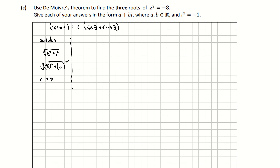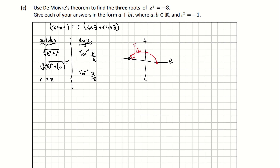Now I need to find the argument theta. The angle is found by taking tan inverse of b over a, which is tan inverse of 0 over minus 8. This will throw up an error on a calculator, so we sketch it on the Cartesian plane. The complex number minus 8 plus 0i sits on the negative real axis, so the angle is pi radians or 180 degrees.